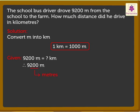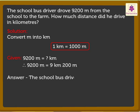Look at the number nine thousand two hundred. The first three digits from the right show the meters, that is two hundred, and the remaining digit shows the kilometers, that is nine. So nine thousand two hundred meters is equal to nine kilometers two hundred meters. Hence the driver drove nine kilometers two hundred meters from the school to the farm.